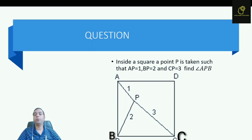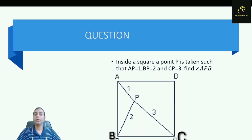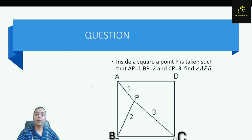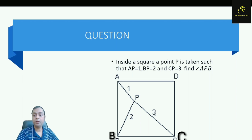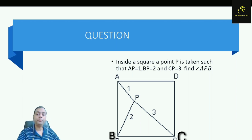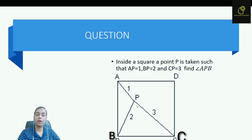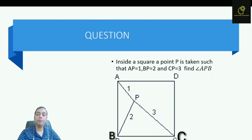Hello students. In this video I am going to discuss a very interesting question. This question is based on the concept of symmetry. The question is: inside a square, a point P is taken such that AP is equal to 1, BP is equal to 2 and CP is equal to 3. We need to find the measurement of angle APB. This question can be solved using coordinate geometry, but here I am going to discuss it using pure geometry.